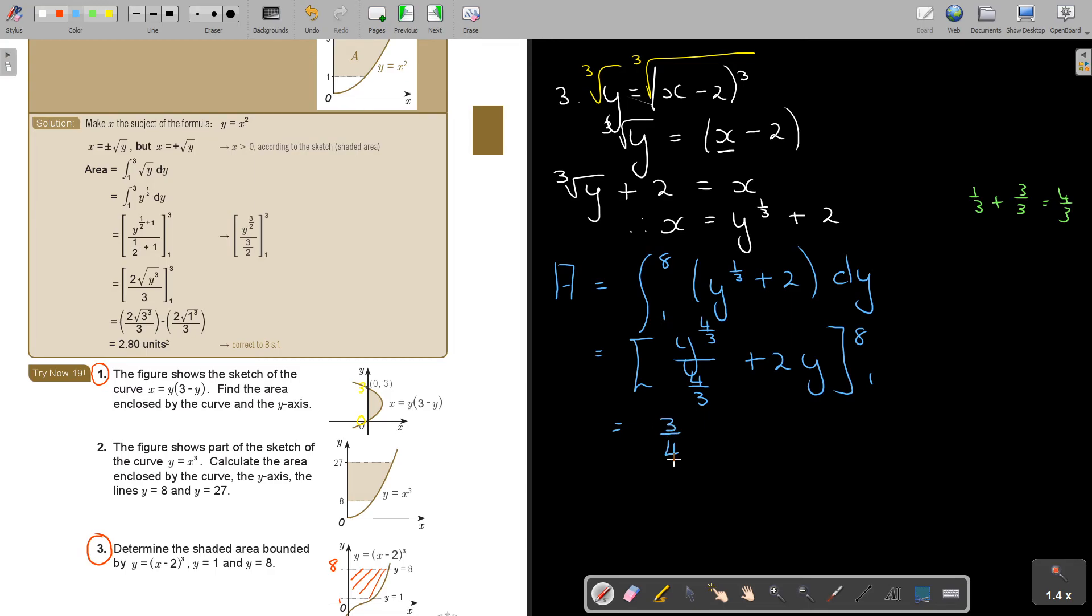3 over 4, y, 4 over 3, plus 2y. It was not necessary to write this whole step down. Okay, now I substitute. So it's 3 over 4, and in the place I say 8. I'll show you how to press this on the calculator.